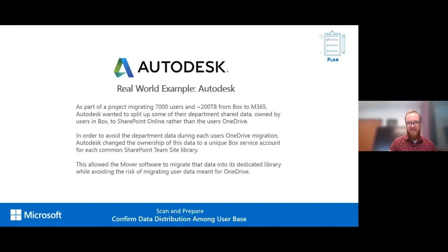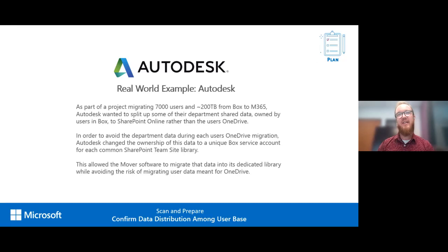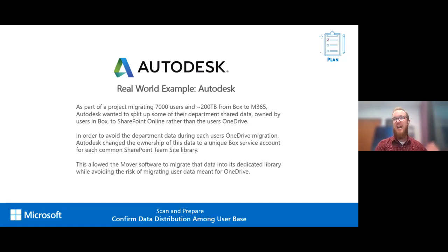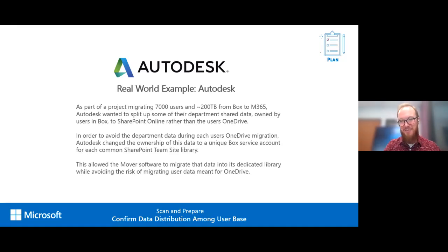Autodesk is a great public case study example of this. They went through each user to determine what data they wanted in SharePoint Online vs. OneDrive, created a service account for each unique library, changed ownership of Box data from users to these service accounts, and then mapped those service accounts straight to their SharePoint Online library. This let them track personal transfers and departmental transfers separately — they could tell users when personal data was done and tell department heads when departmental data was complete.